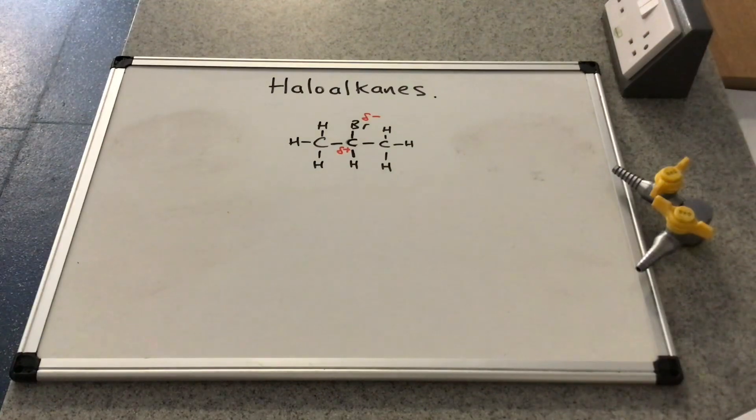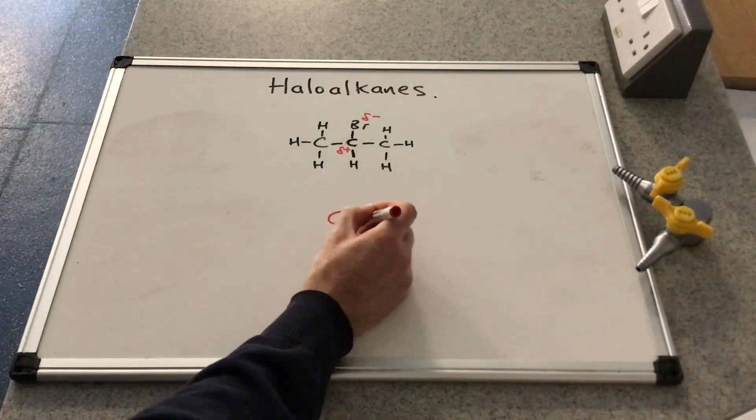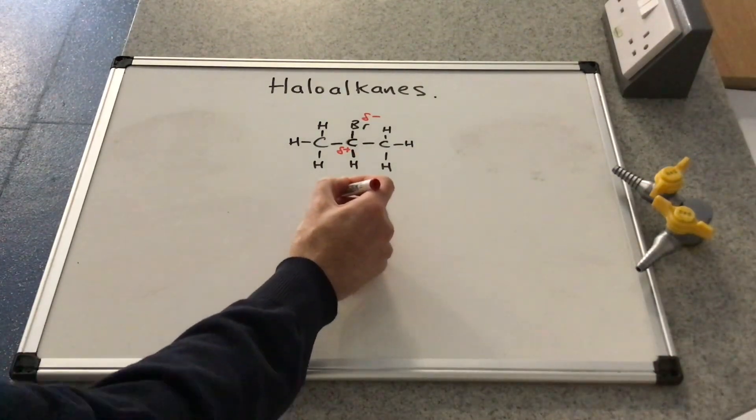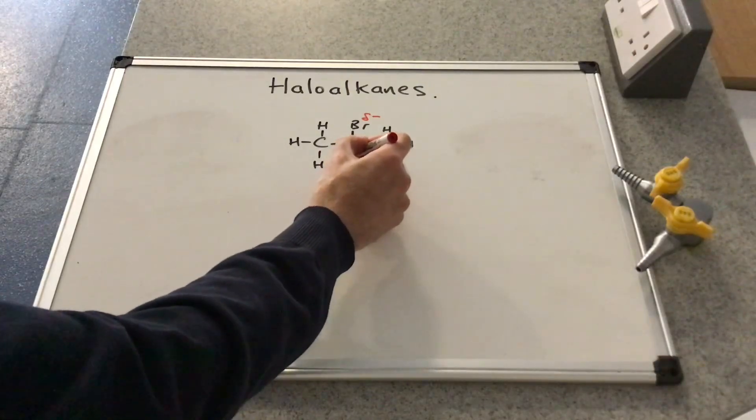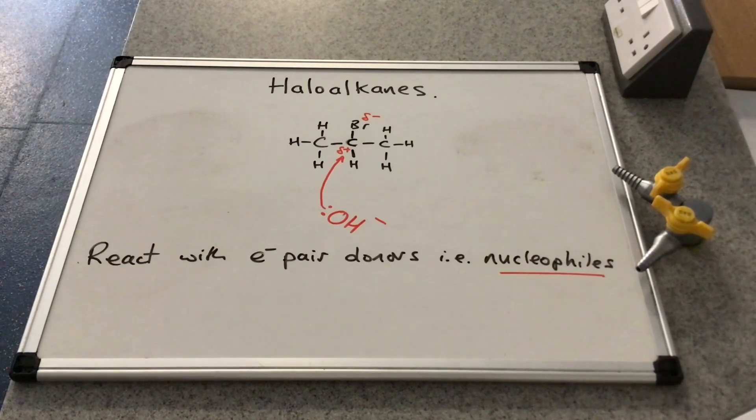So because of that delta-positive carbon, the haloalkane is able to attract a species that is able to donate a pair of electrons. So if you think about something with a lone pair, like a hydroxide ion, the pair of electrons in the oxygen is going to be attracted to that slightly positive carbon. In other words, haloalkanes are going to react with nucleophiles, electron pair donors.